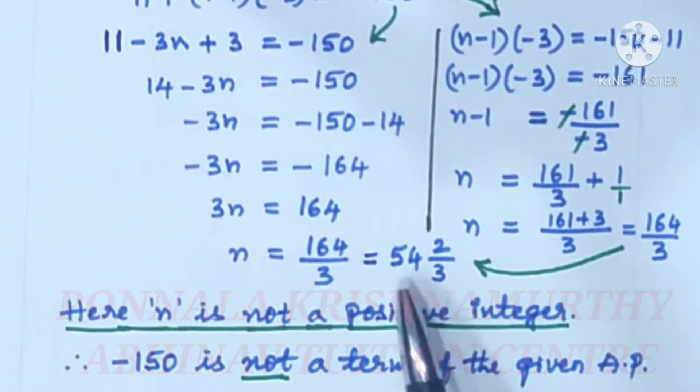So, number of terms cannot be 54⅔. Here, n is not a positive integer. Therefore, minus 150 is not a term of the given AP.